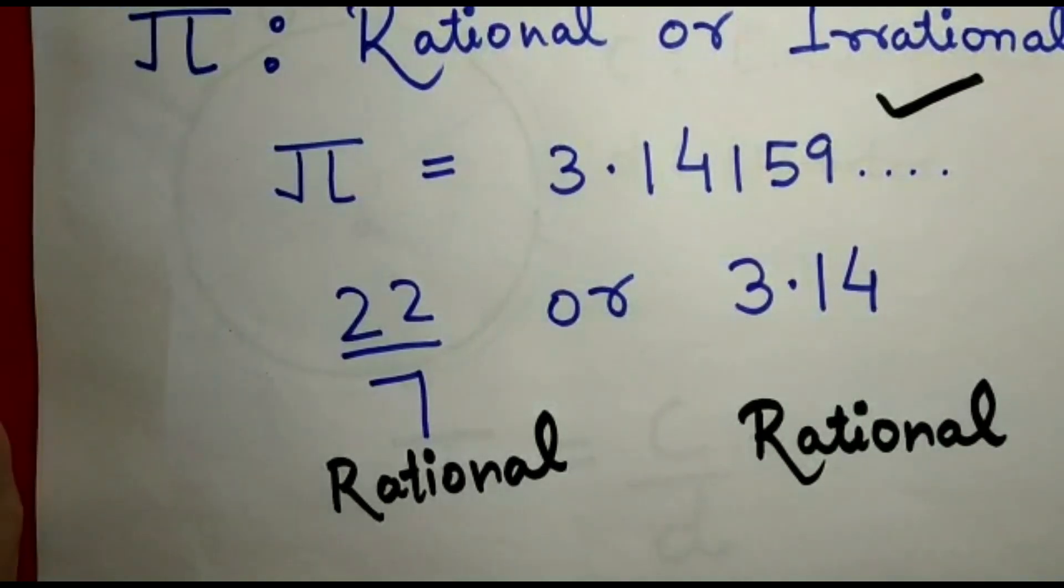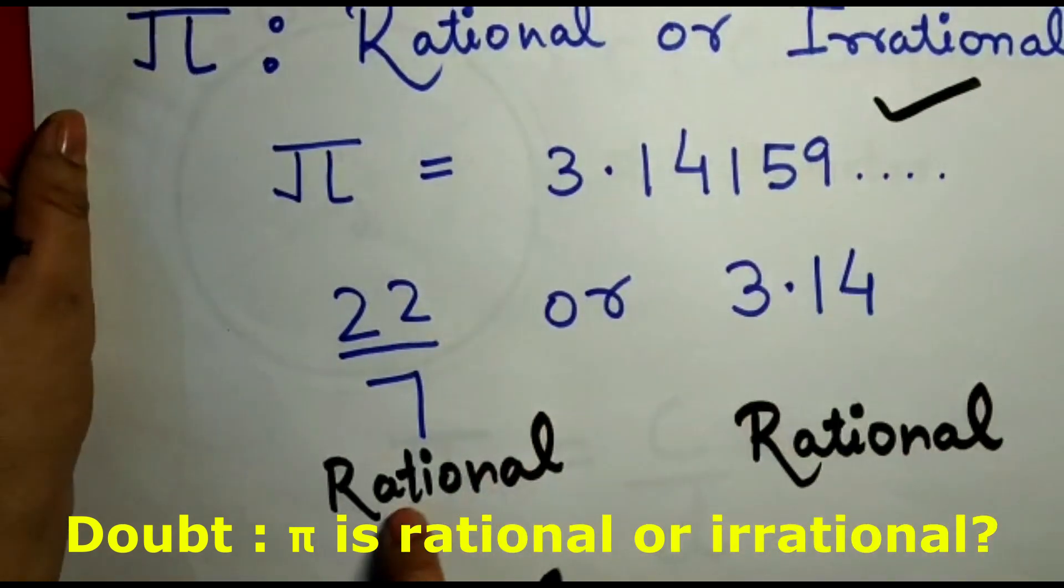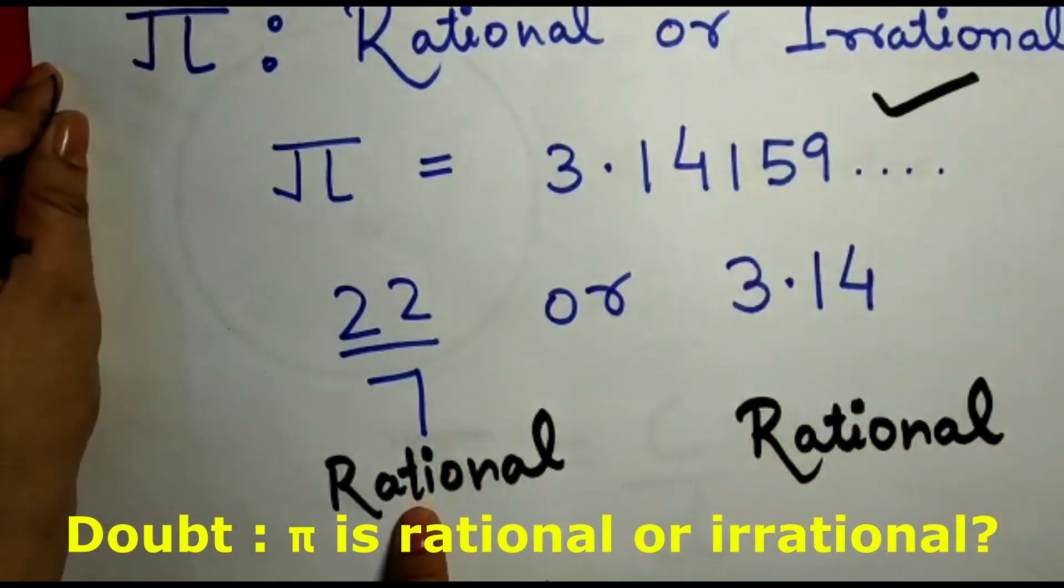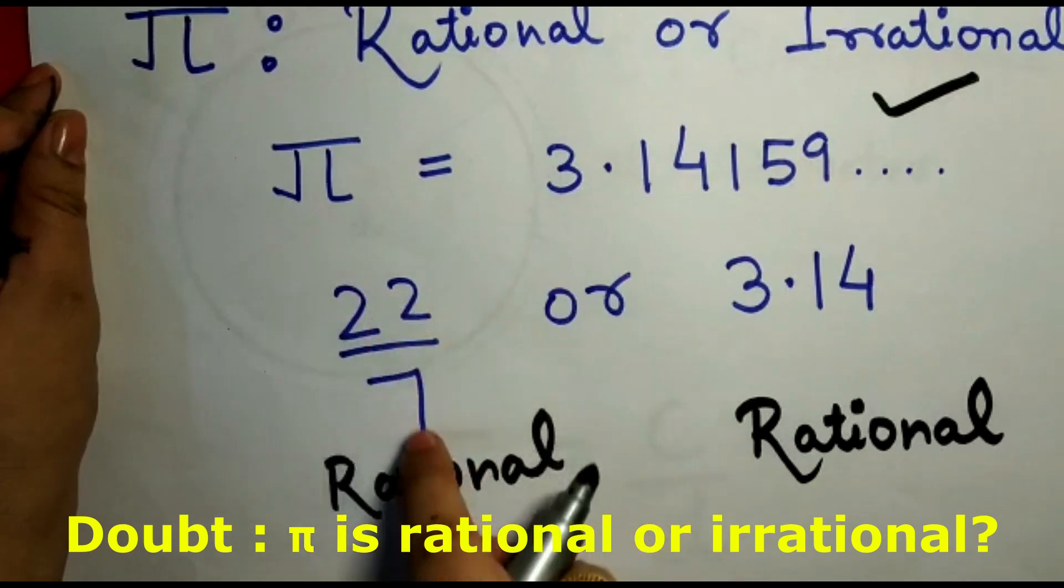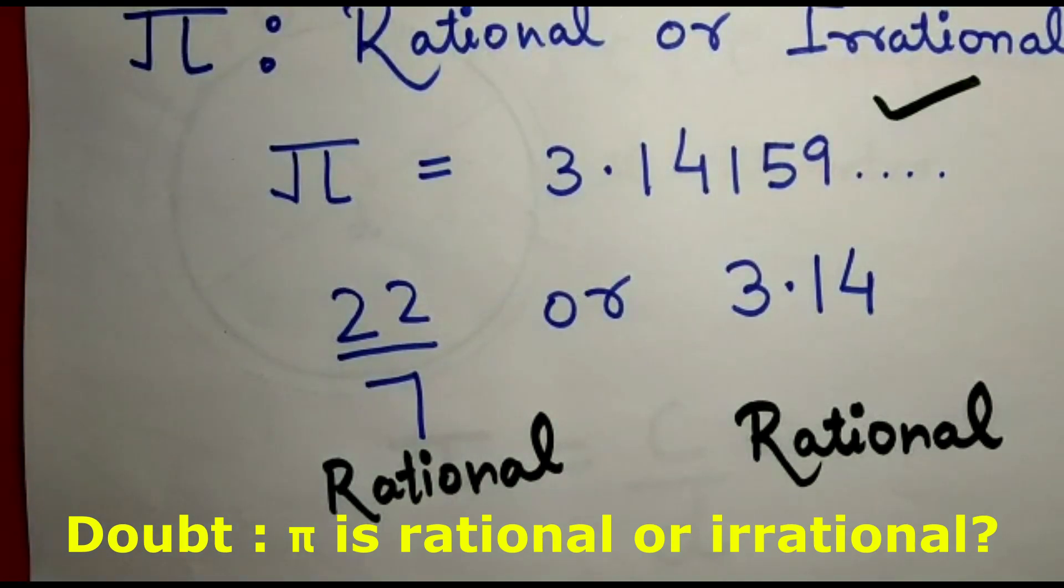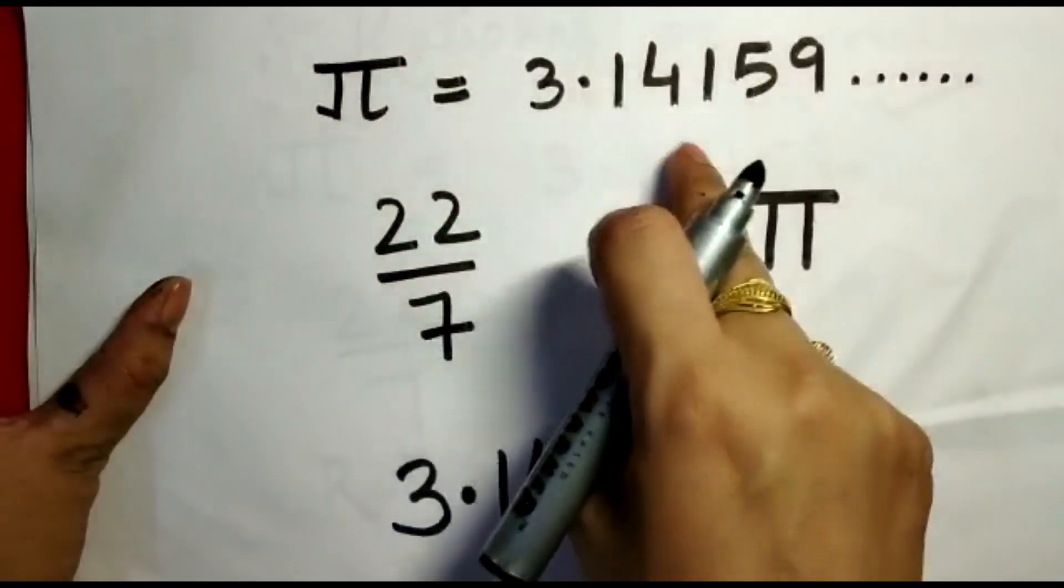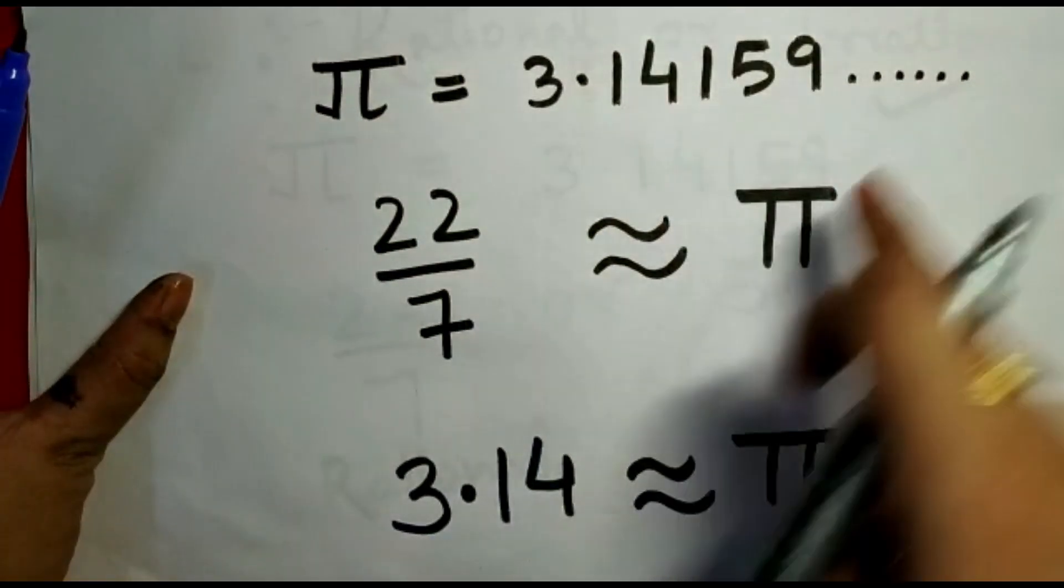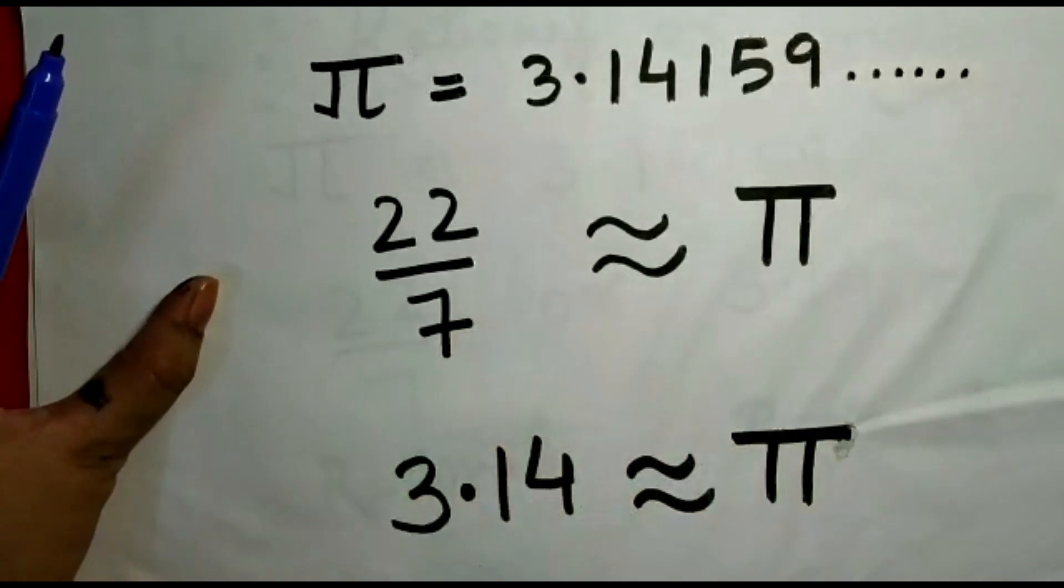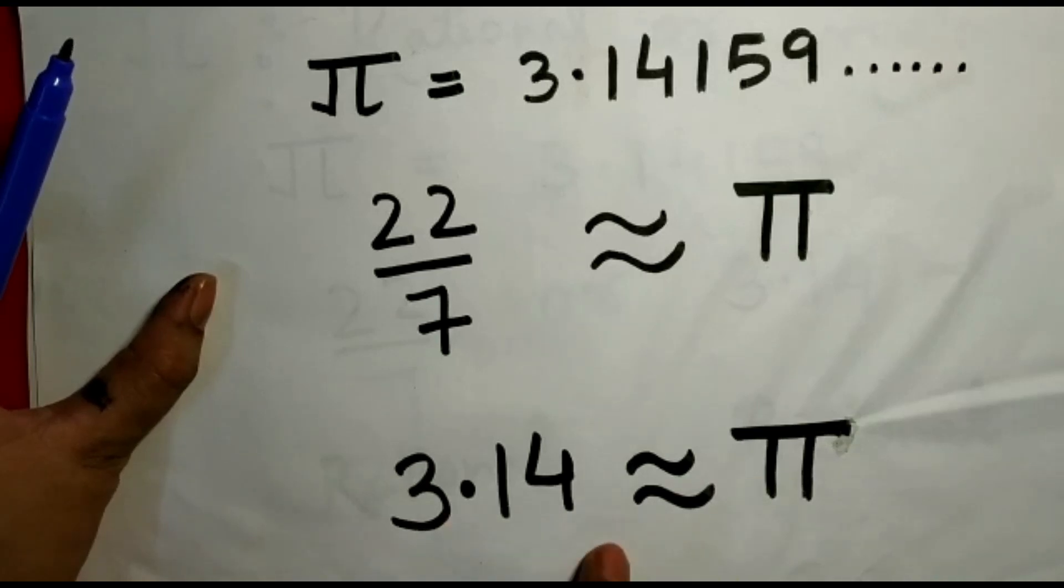So the doubt that comes in your mind is: Pi is an irrational number, but why are we using a rational expression? Can I say that Pi equals 22/7? I think that is wrong. What you can say is: if the value of Pi is 3.14159... which is not terminating, then Pi is approximately equal to 22/7, not exactly equal. Same thing, Pi is approximately equal to 3.14, not exactly equal.